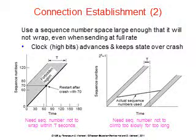The forbidden region shows times during which segment sequence numbers are illegal leading up to their use. If a segment is sent with a sequence number in this region, it could be delayed and impersonate a different packet with the same sequence number issued slightly later. For example, if a host crashes and restarts at 70 seconds, it uses clock-based initial sequence numbers to pick up where it left off, avoiding the forbidden region. In TCP, duplicates are detected using a combination of a 32-bit sequence number and a timestamp, which won't wrap within twice the MSL — satisfying both sides of the constraint.